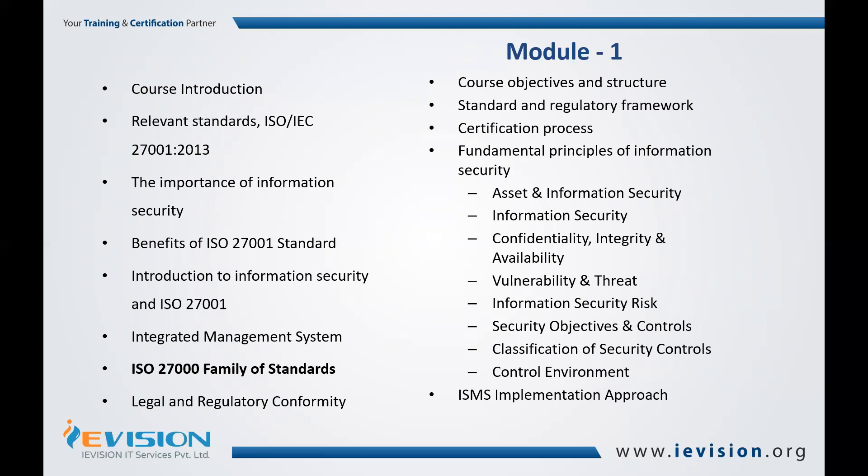You will understand various terminologies related to information security, like CIA — that is confidentiality, integrity, availability — as well as threat, vulnerability, risk, and more terminologies related to attack, access, authentication, and others, which are defined in ISO 27000.